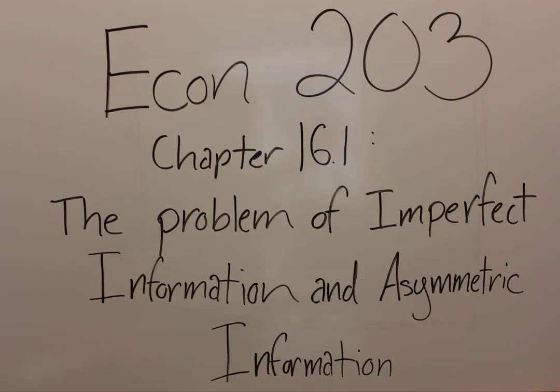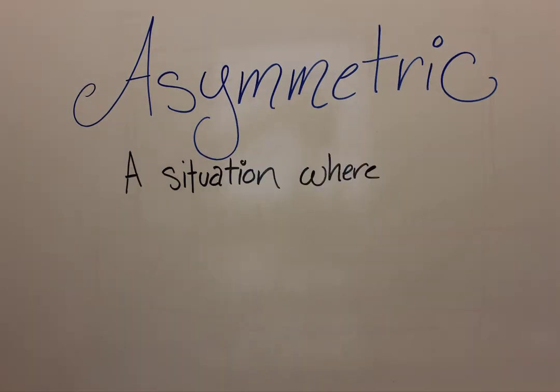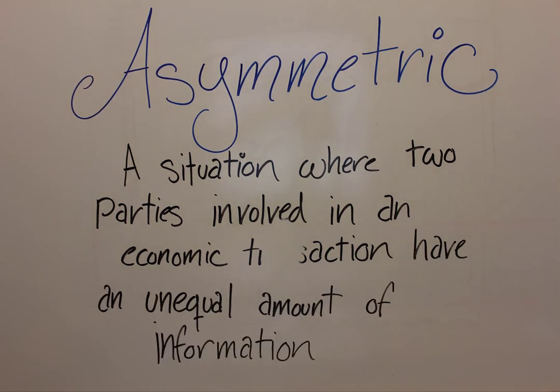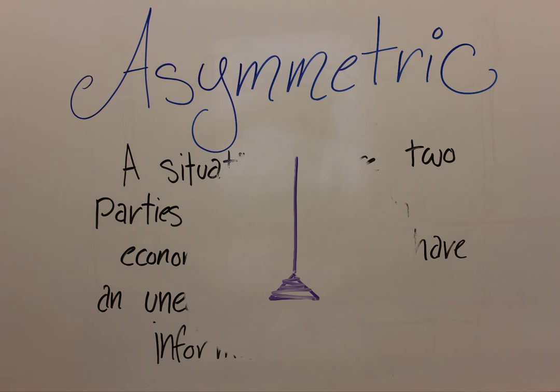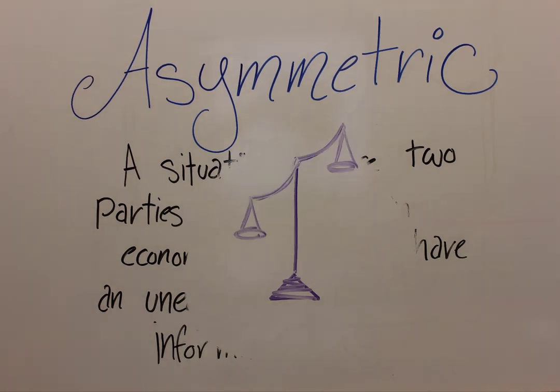Alright, so this chapter starts out with a comparison of imperfect and asymmetric information. Asymmetric information is defined as a situation where two parties involved in an economic transaction have unequal amounts of information. In similar terms, it is when one person in a market transaction knows more than another.